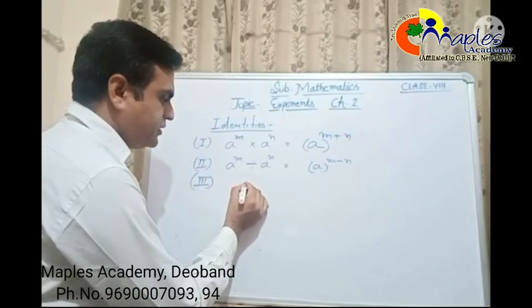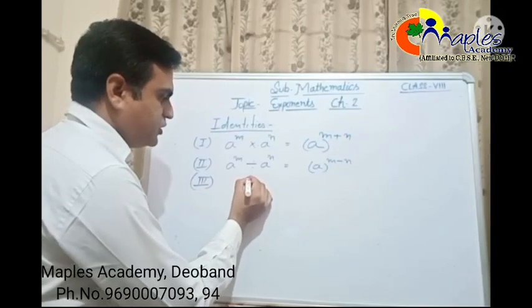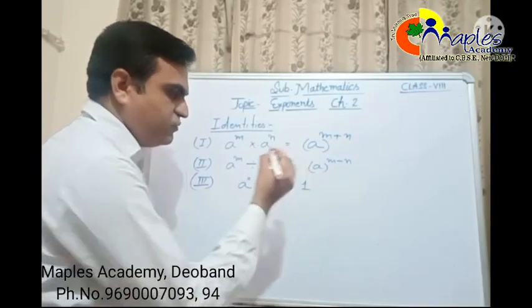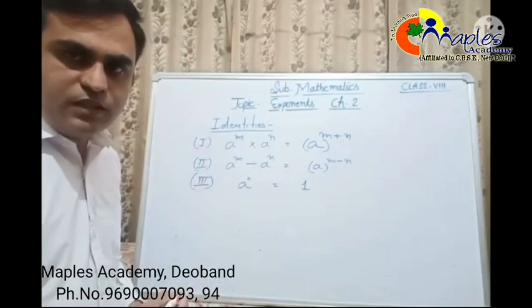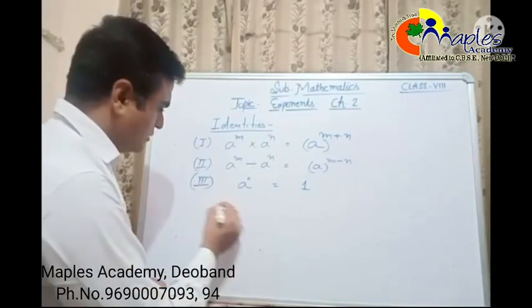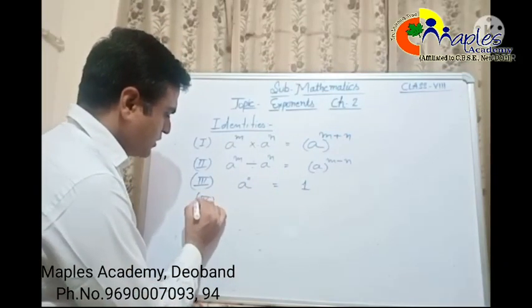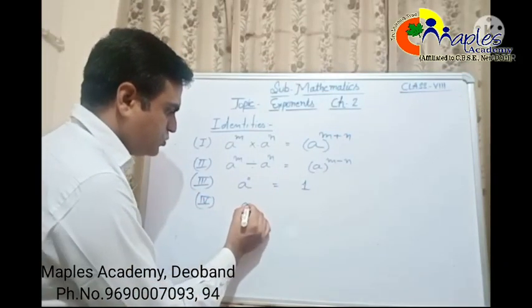The third identity — this is the most important identity — is: a raise to the power 0 equals 1. Identity number four is: a raise to the power m, whole raise to the power n, equals a raise to the power m into n.